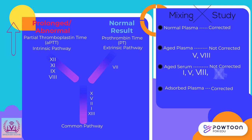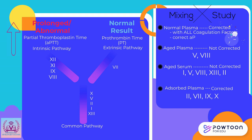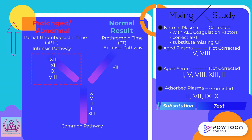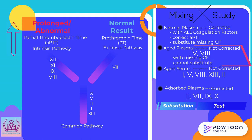Since fresh plasma, which contains all coagulation factors, corrected the aPTT, the factor present in fresh plasma was able to substitute the missing factor — this is why mixing studies are also called substitution tests. Aged plasma did not correct, meaning a factor missing in aged plasma (factors 5 and 8) could not substitute the patient's missing factor. Since factor 5 is not an intrinsic factor, we can eliminate it, leaving factor 8 as the possible missing factor.